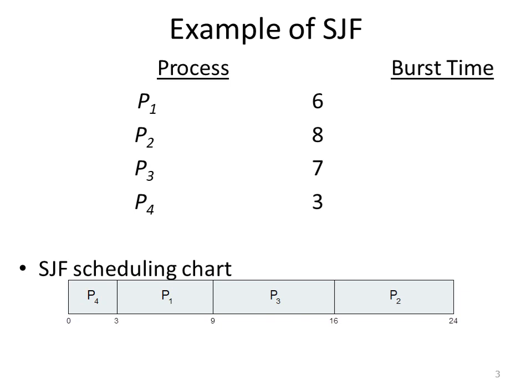The next shortest burst time is 7 ms of P3, so it is shown after P1 in the Gantt chart. Then at the end, P2 is allocated with the CPU.